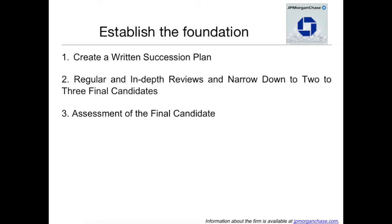There are three steps in order to establish the foundation to select the best candidates. The first one is to create a written succession plan. The Chase succession plan should detail how the company's chief executive officer is elected and replaced, the qualifications for a candidate to be considered as a future CEO, and the role of the board and various board committees in this succession process. This plan should also include emergency succession procedures in case of the current CEO's sudden death or vacancy.